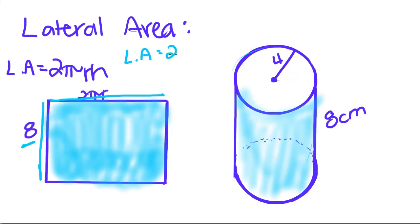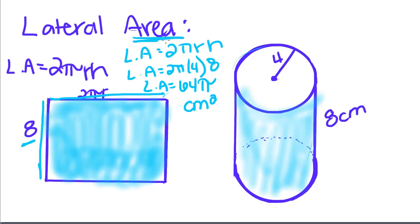The lateral area for this is equal to 2π times our radius, which is 4, times our height, which is 8. So 2 times 4 is 8, times 8 is 64, so this is 64π centimeters squared, because area is always centimeters squared.